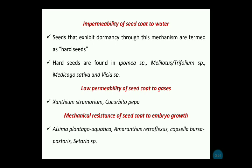For low permeability of the seed coat to gases, examples include Xanthium strumarium (also called cocklebur) and Cucurbita pepo. For mechanical resistance of the seed coat to embryo growth, examples include Alisma plantago-aquatica, Amaranthus retroflexus, Capsella bursa-pastoris, and Setaria species. You can pause the video and note down all these examples.